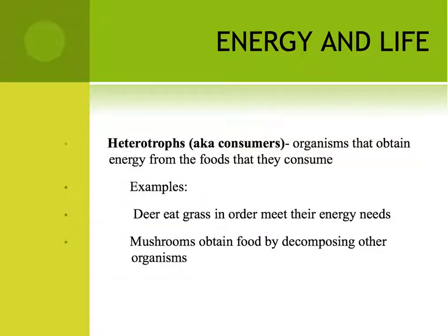Organisms that cannot make their own food — and that would include us — are what we call heterotrophs, or consumers. These are organisms that must eat in order to obtain energy from the food that they eat. Examples of heterotrophs include deer, cows, coyotes, and even mushrooms, because mushrooms do not do photosynthesis — they must consume materials around them. We'll talk about how that works in later units.